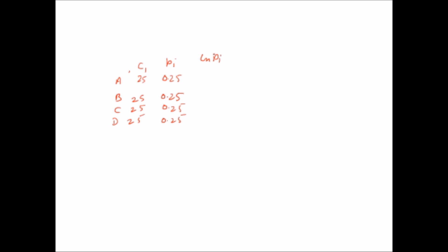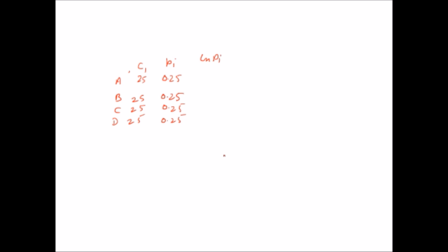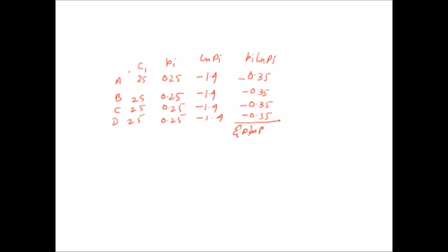The ln(PI) value for 0.25 is minus 1.4. So for all four species in C1, ln(PI) equals minus 1.4. Multiplying PI × ln(PI) gives minus 0.35 for each species. The summation of PI × ln(PI) across all four species equals minus 1.4. Since the Shannon index formula is the negative summation of PI × ln(PI), the Shannon index for community C1 equals 1.4.